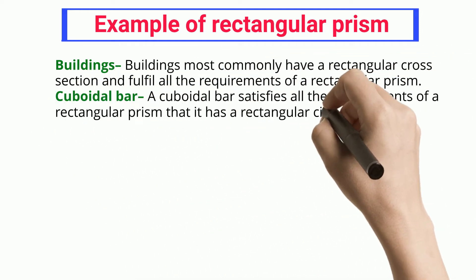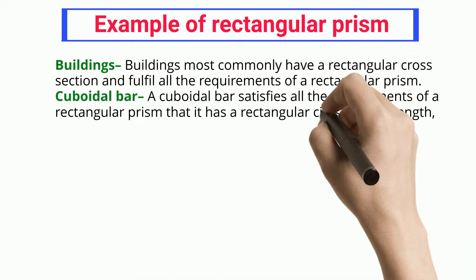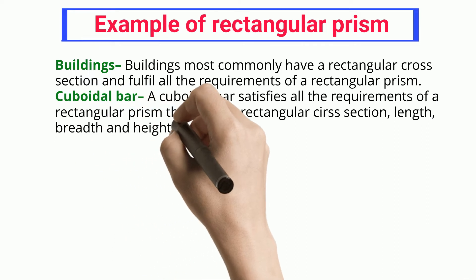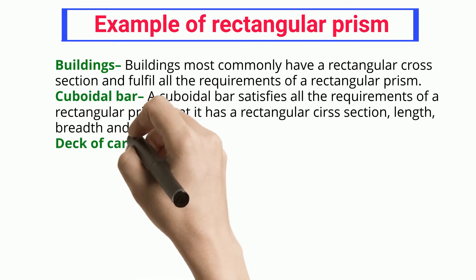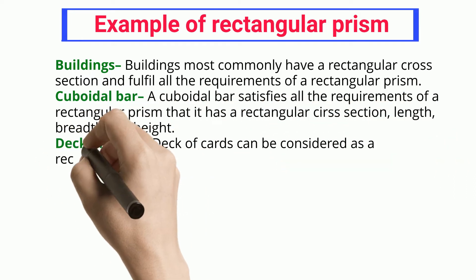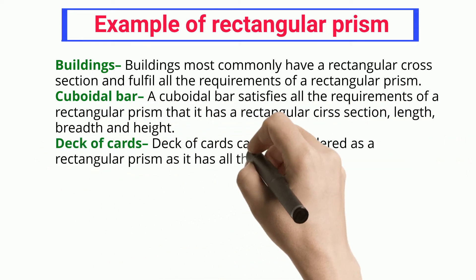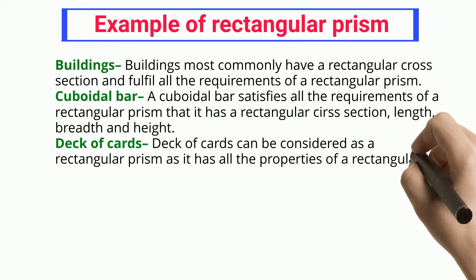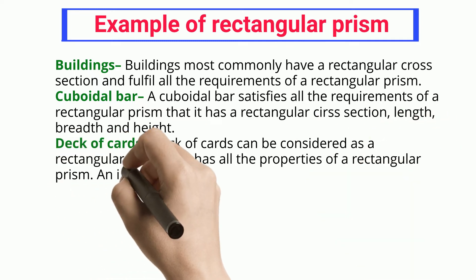Cuboidal bar: a cuboidal bar satisfies all the requirements of a rectangular prism — it has a rectangular cross-section, length, breadth, and height.